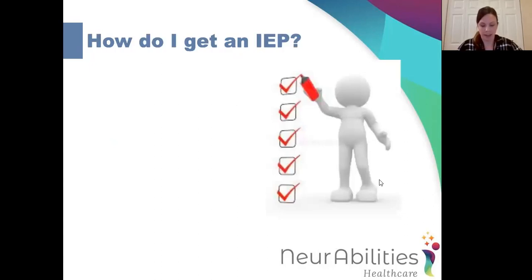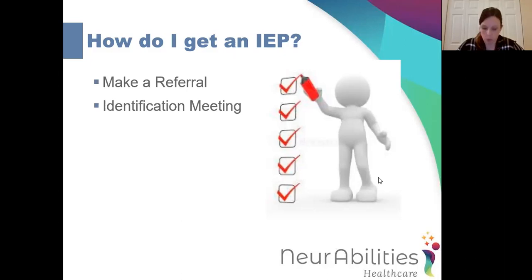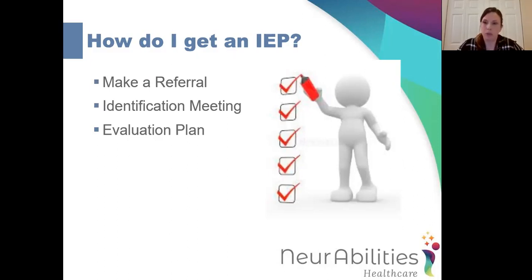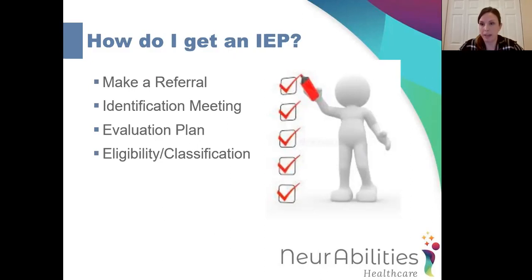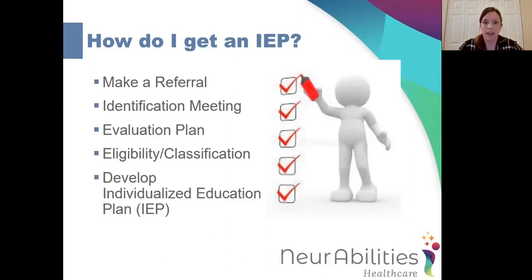So we're going to talk about how to get an IEP. The first thing you need to do is make a referral to your school district. Within 20 calendar days, you will have an identification meeting scheduled. At that meeting, the child study team will write an evaluation plan discussing what evaluations they will complete to determine eligibility. Once evaluations are complete, you'll have an eligibility meeting where your child may or may not be classified. If eligible, they will develop an IEP. We're going to go into more detail about each of these steps now.